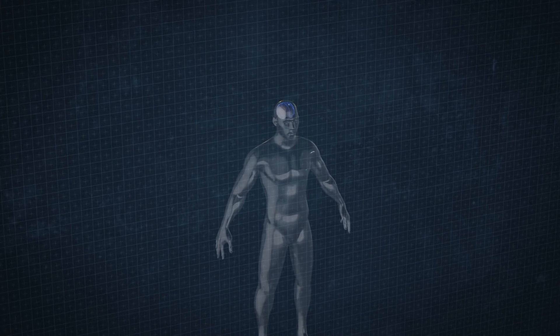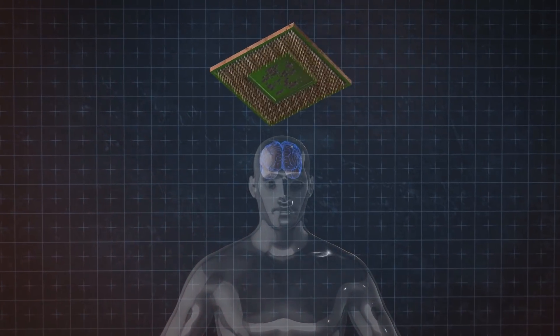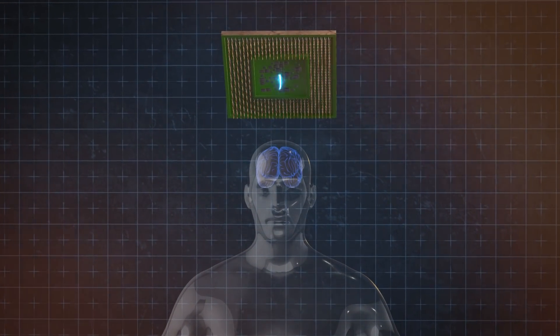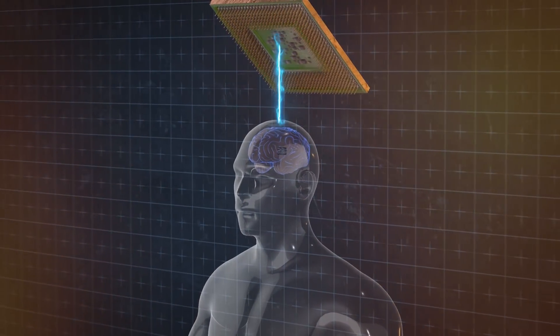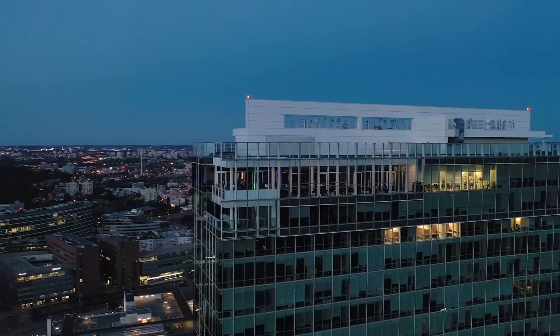In moments when we become more receptive to advertising, the chip will emit special impulses to certain areas of the brain and show us the advertisement. But that's not all.